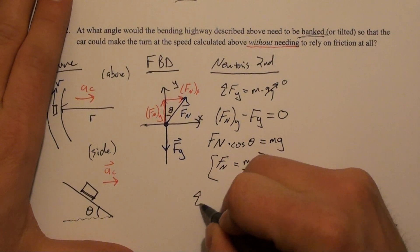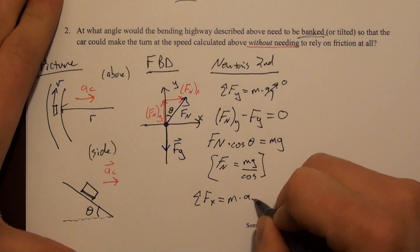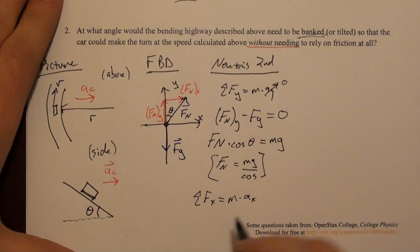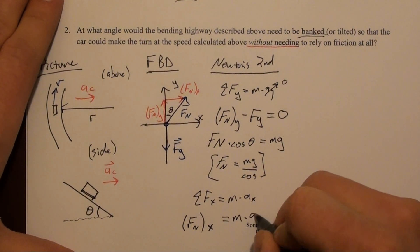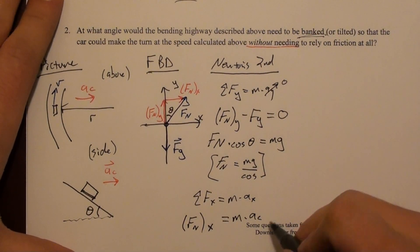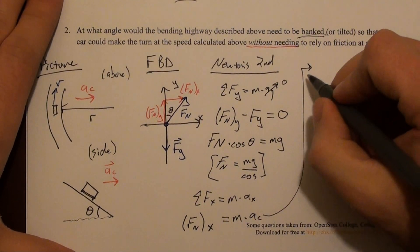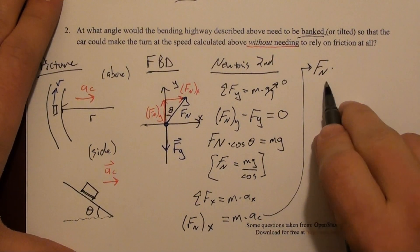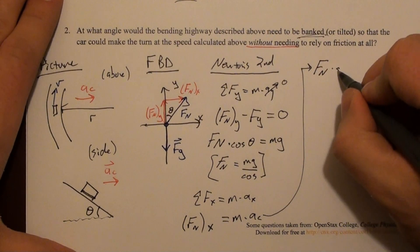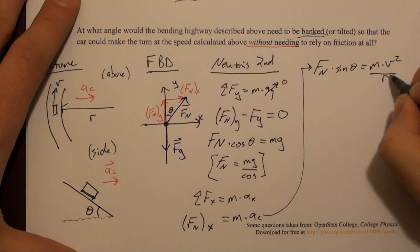Now I can apply Newton's second law in the x direction. M times a_x. The only force in the x direction is part of the normal force, so that's F_n_x equals m times the centripetal acceleration. Let's continue this on the next line. The x component of the normal force is the full normal force times sine θ equals mass times the centripetal acceleration, which is v² over r.